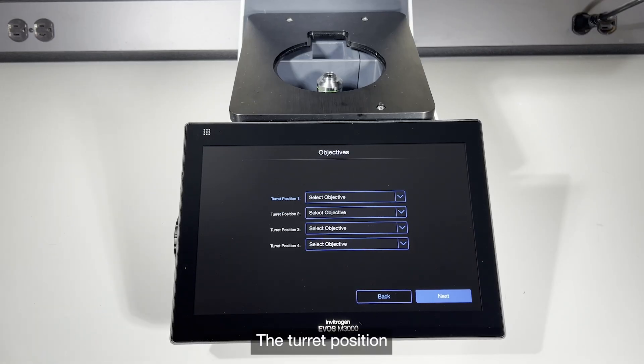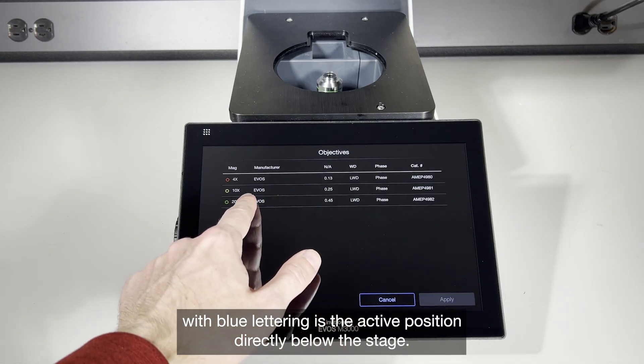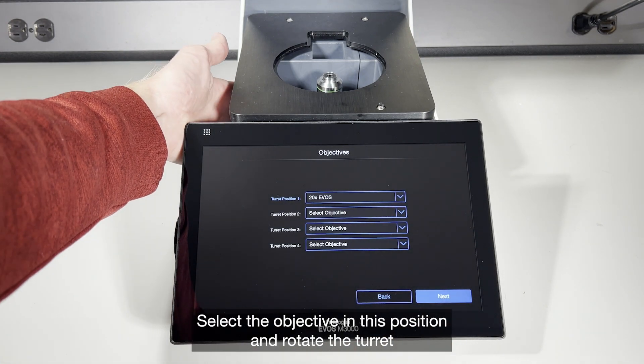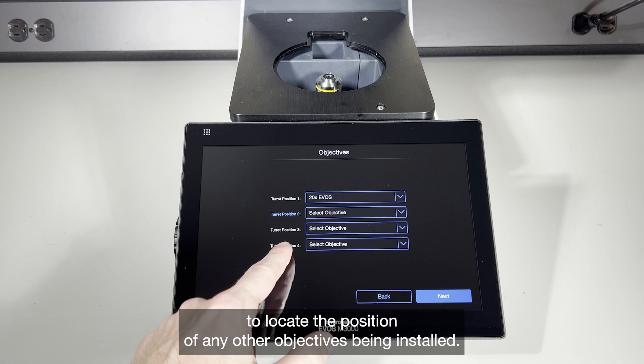The turret position with blue lettering is the active position directly below the stage. Select the objective in this position and rotate the turret to locate the position of any other objectives being installed.